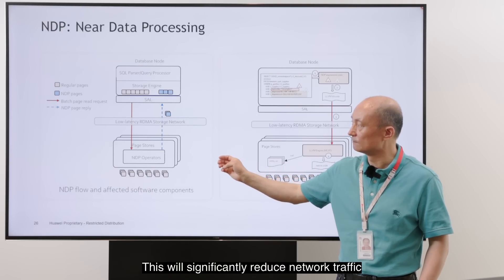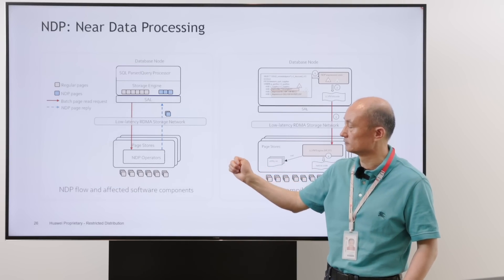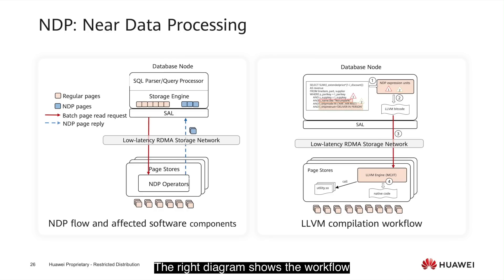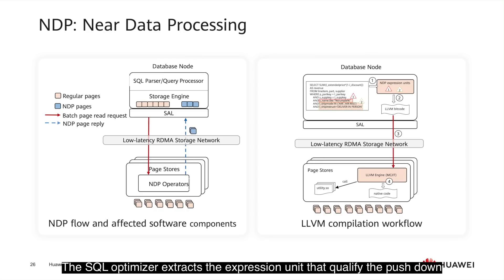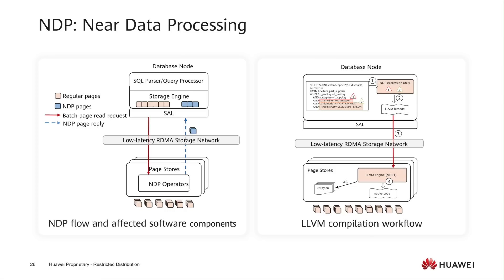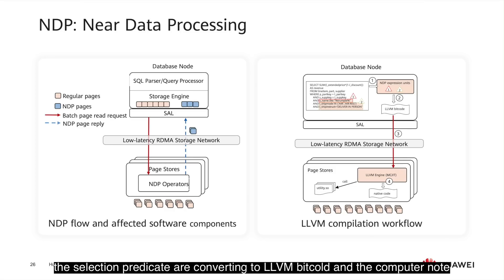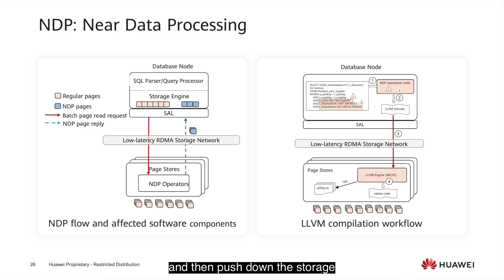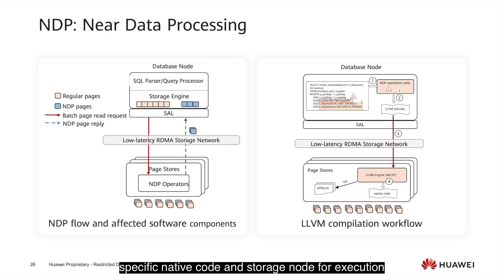This will significantly reduce network traffic. The right diagram shows the workflow. The SQL optimizer extracts the expression unit that qualifies the pushdown — in this case, the selection predicate. The selection predicate converts into LLVM bitcode at the compute node, and then is pushed down to storage. The LLVM bitcode is compiled into architecture-specific native code at the storage node for execution.